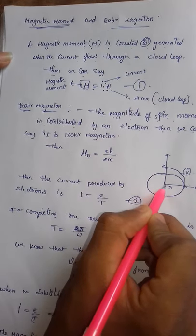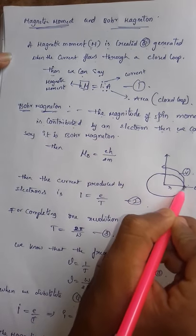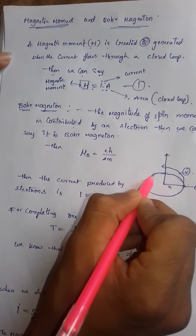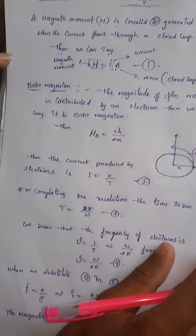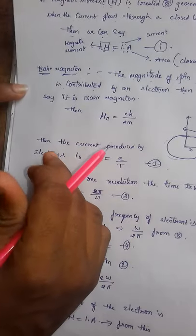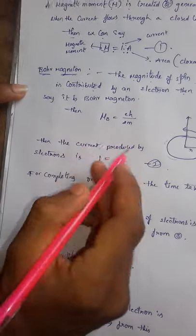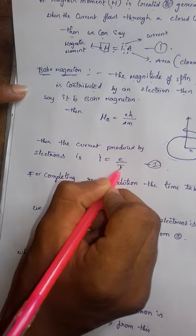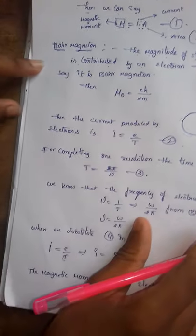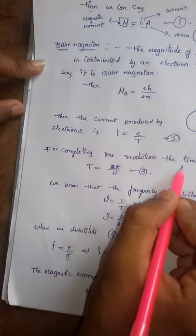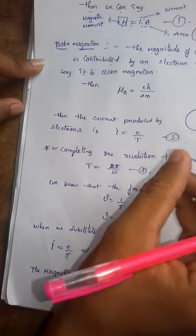See here, this is the radius. Here the electron is passing through a closed loop with velocity v. Then we can say the current produced by an electron is I equals to E by T. For completing one revolution, the time taken by the electron T equals to 2π by omega. This is the third equation.